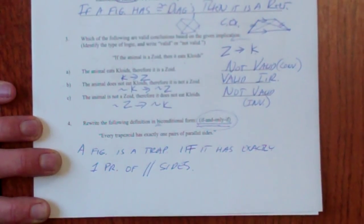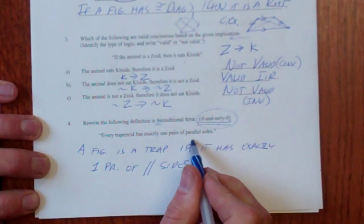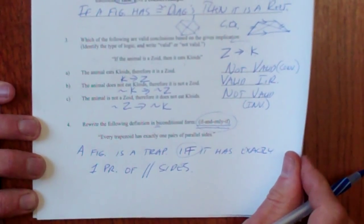It has exactly one pair of parallel sides. Again, I'm abbreviating just to go quickly. That's good. You can write out if and only if if you want, but you can also use the IFF abbreviation.